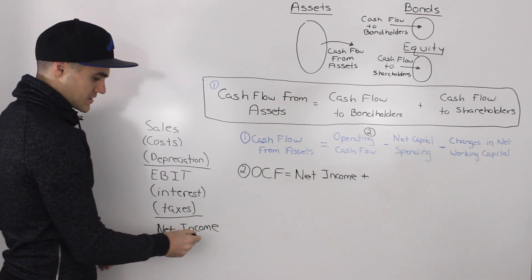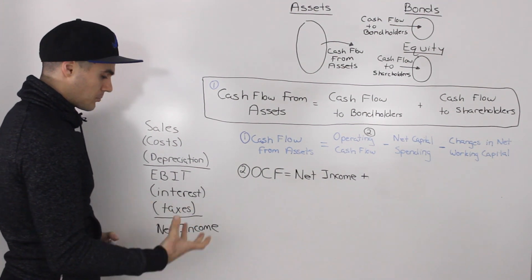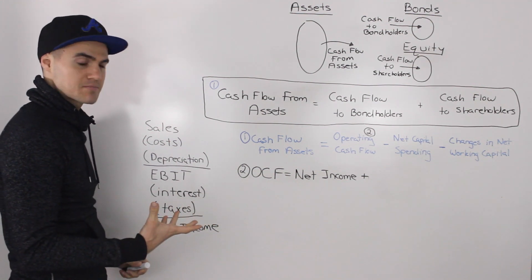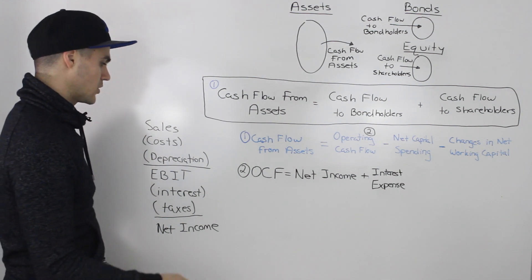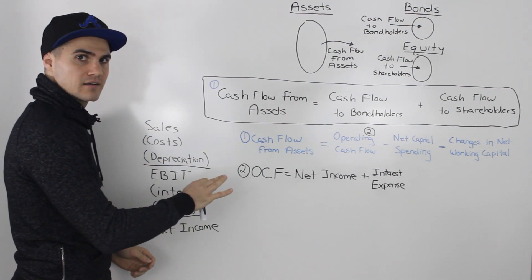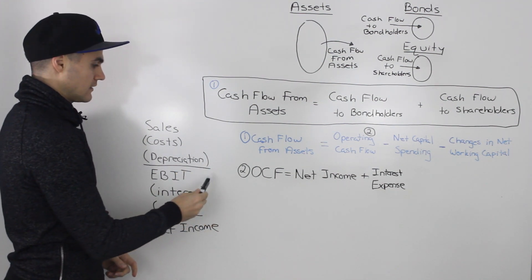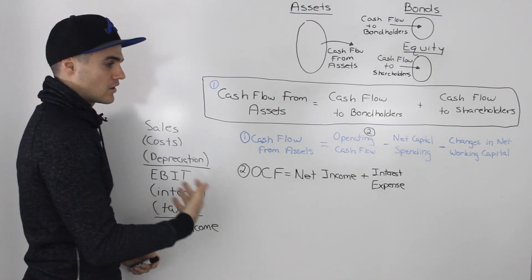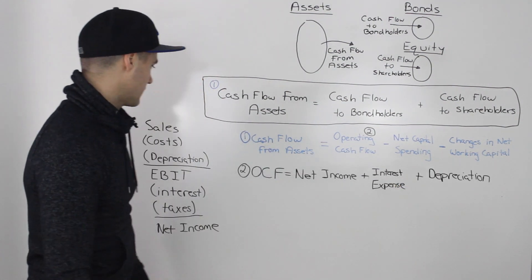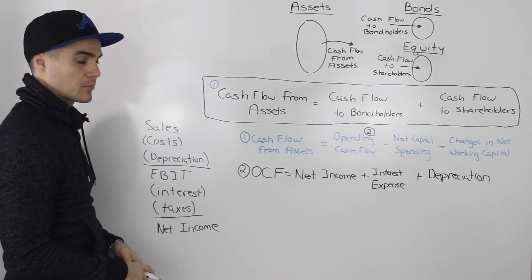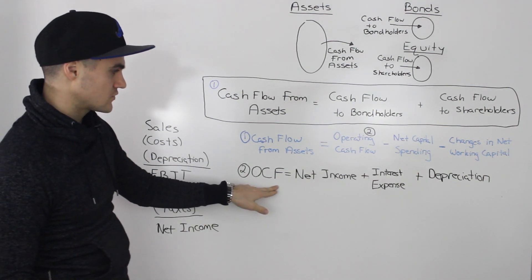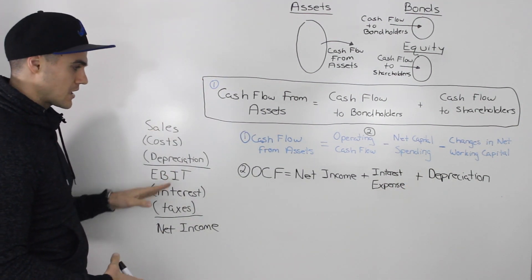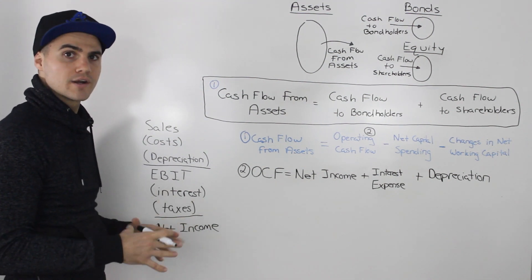Going up the income statement from net income: taxes and costs we leave in. Interest is not an operating cash flow — it's a financing expense — so we add back the interest expense. Depreciation is a non-cash expense, so it's also not an operating cash flow, and we add it back too. Costs and sales are operating expenses, so we leave those. Operating cash flow equals net income plus interest expense plus depreciation.